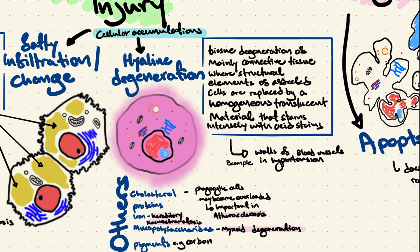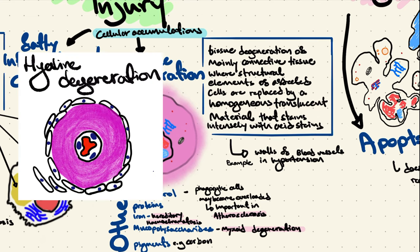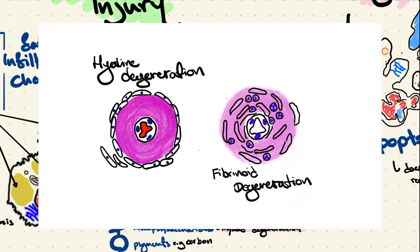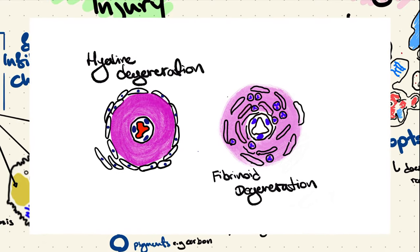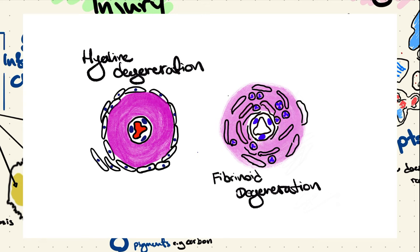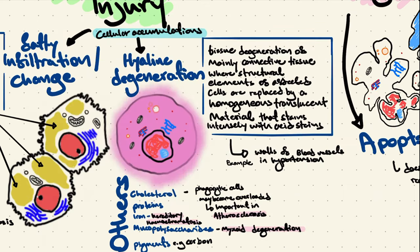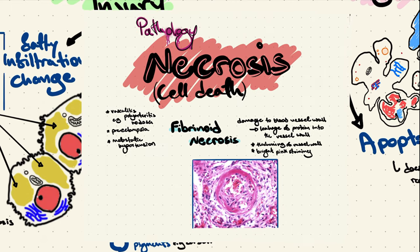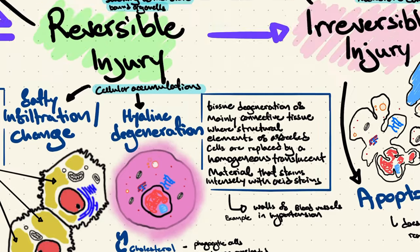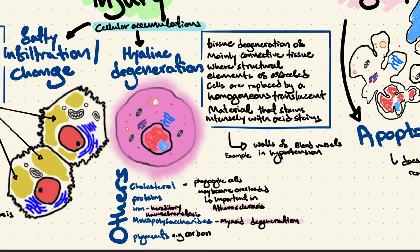Another example of reversible injury is hyaline degeneration. In connective tissue, we might see the accumulation of a homogenous translucent material that stains intensely with acid stains, appearing bright pink on histology. A good example is the walls of blood vessels seen in hypertension or diabetes mellitus. It's important to note that hyaline degeneration is different from fibrinoid necrosis, which is cell death — although they may appear similar on histology with a bright pink color. We will discuss fibrinoid necrosis in more detail in the next video about necrosis.